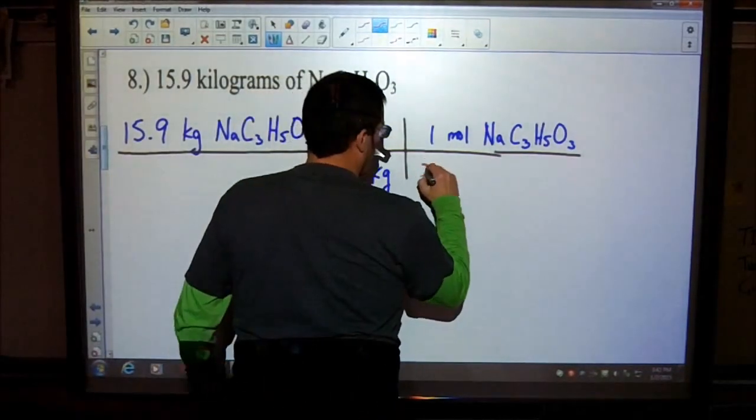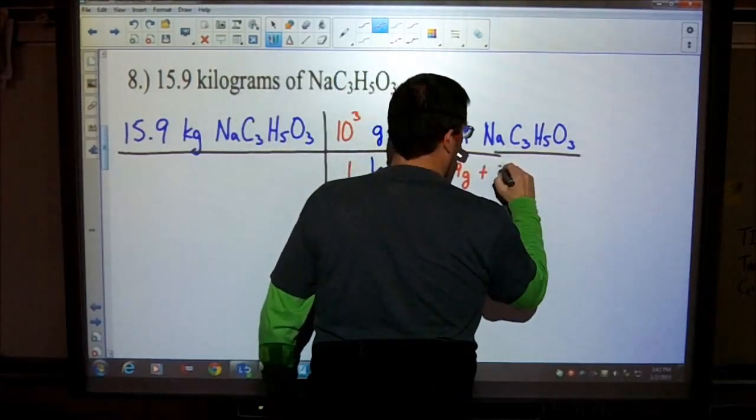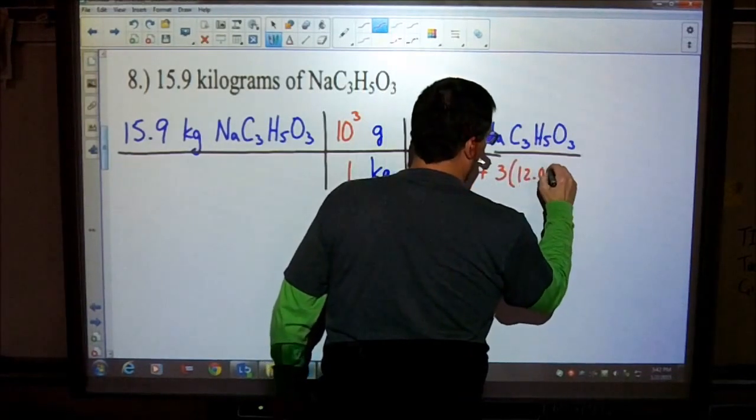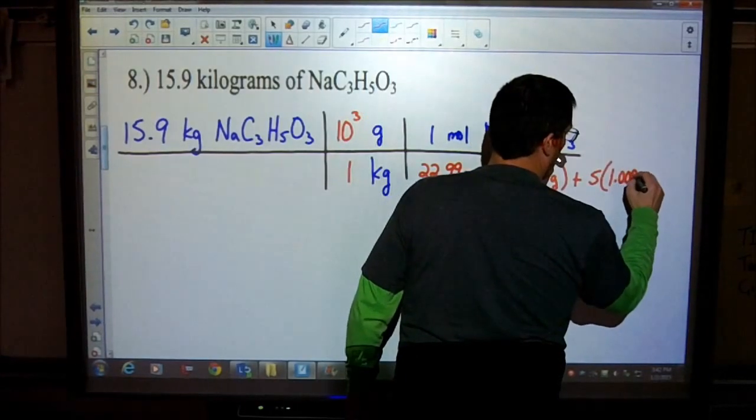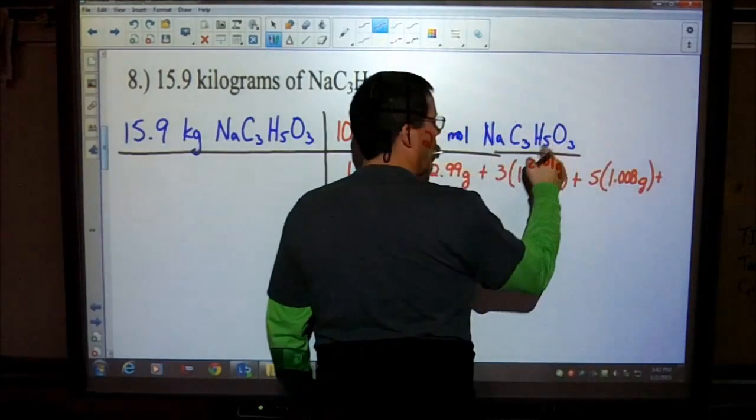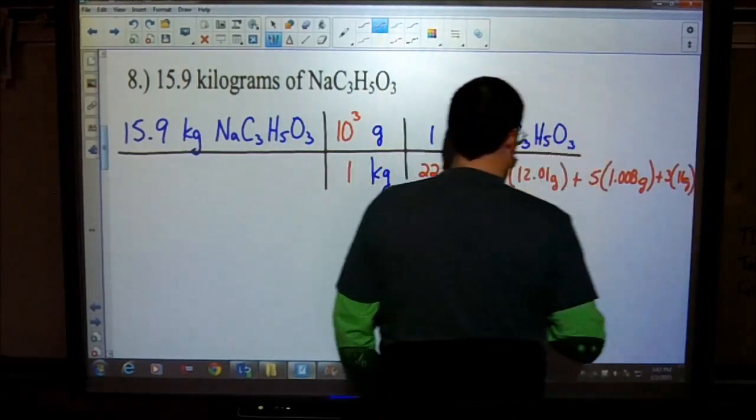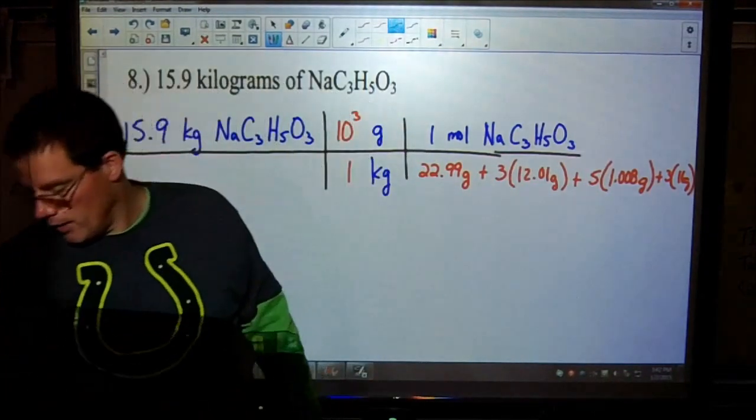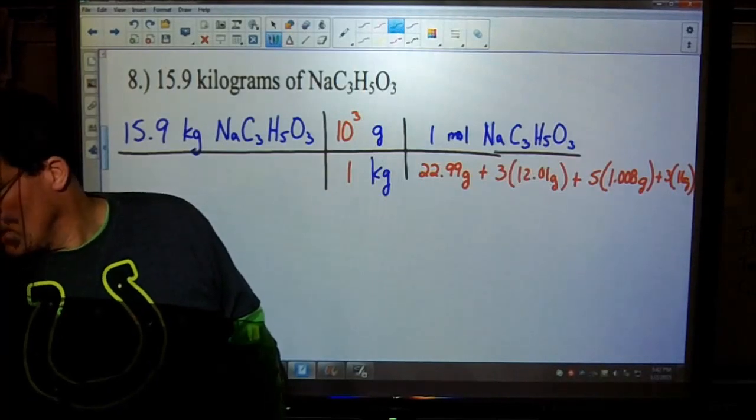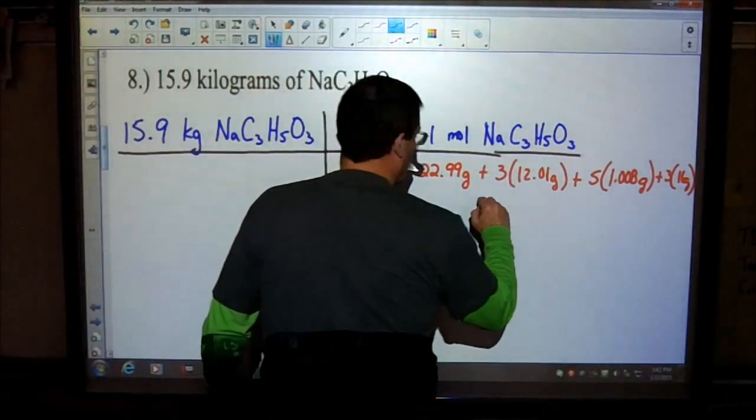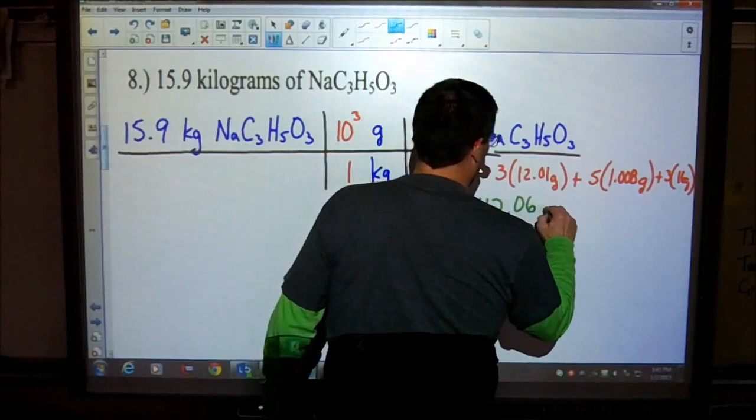Looking at your periodic table, you can find that sodium is 22.99 grams. We have three carbons, which is 12.01 grams. We have five hydrogens, so five times 1.008 grams. And then we have three oxygen, so three times 16 grams. And when we look at that, all of that adds up to 112.06 grams.